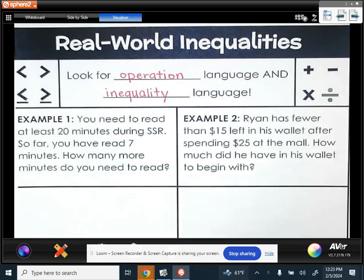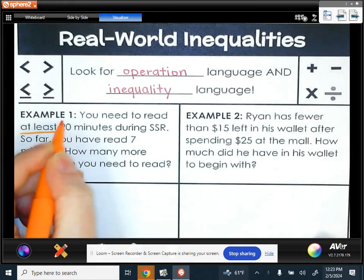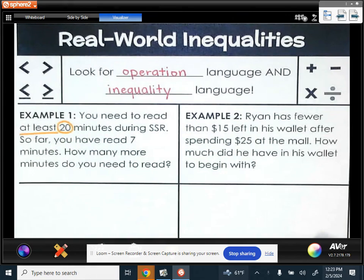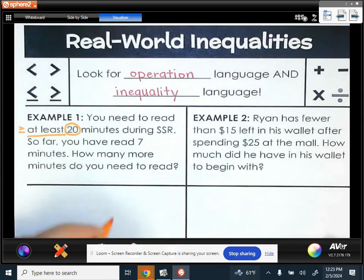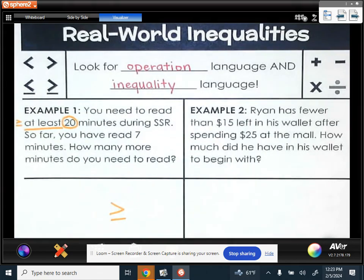Example one says you need to read at least 20 minutes in SSR. So at least is a word that means greater than or equal to. So we know we're going to be using the greater than or equal to symbol in our inequality. And because it says at least 20 minutes, that's going to be greater than or equal to 20.